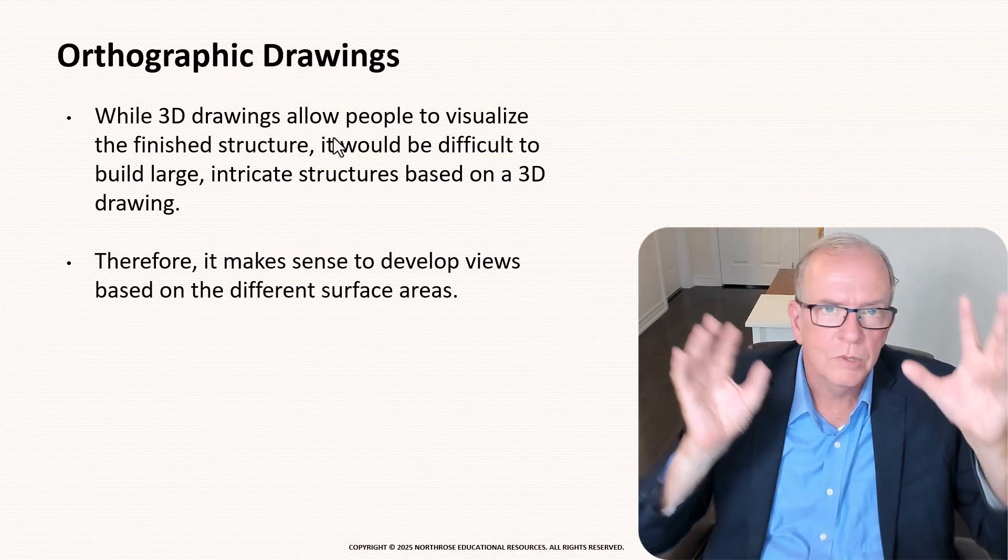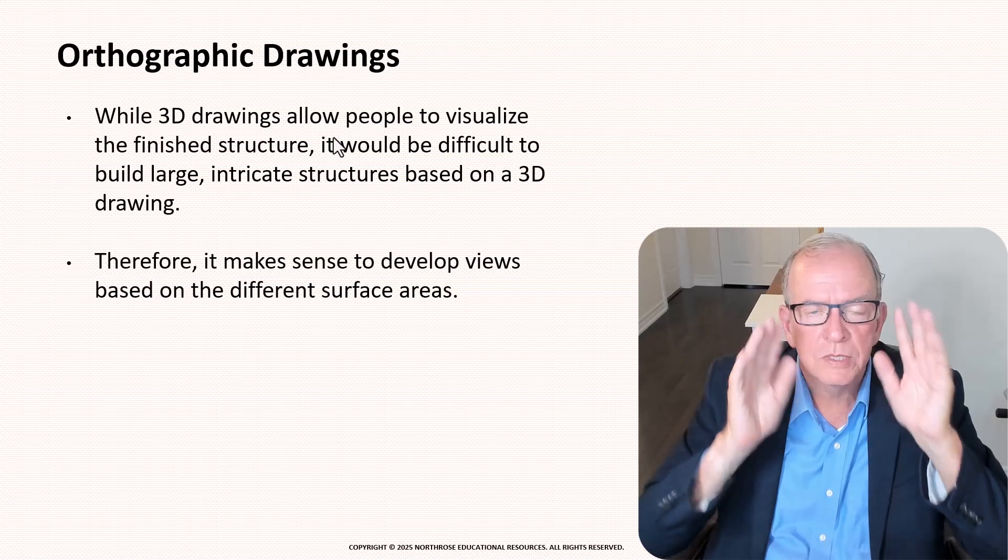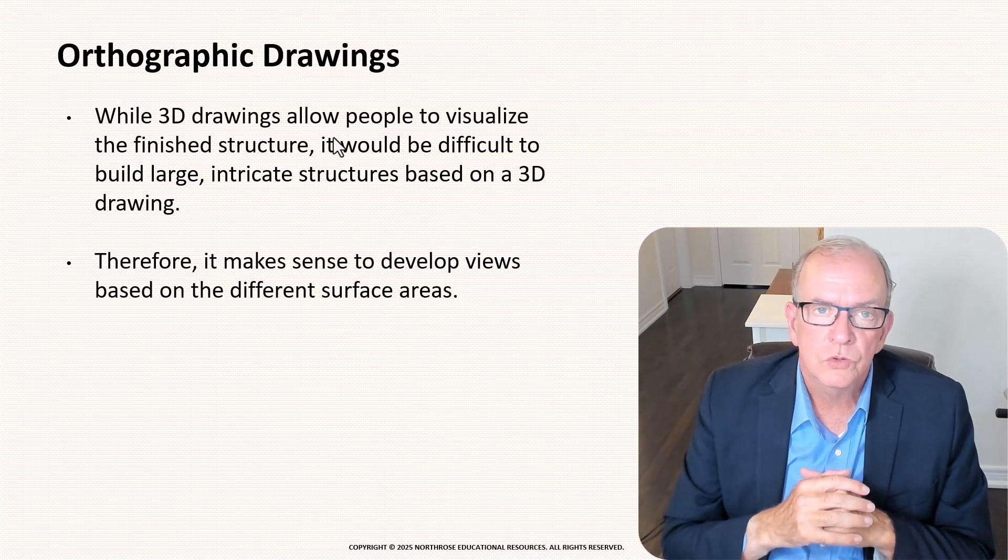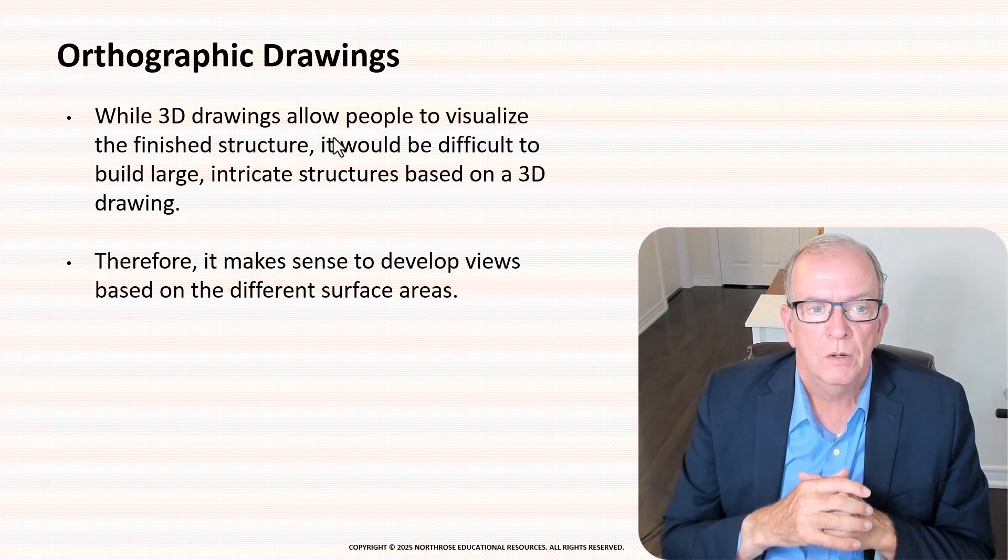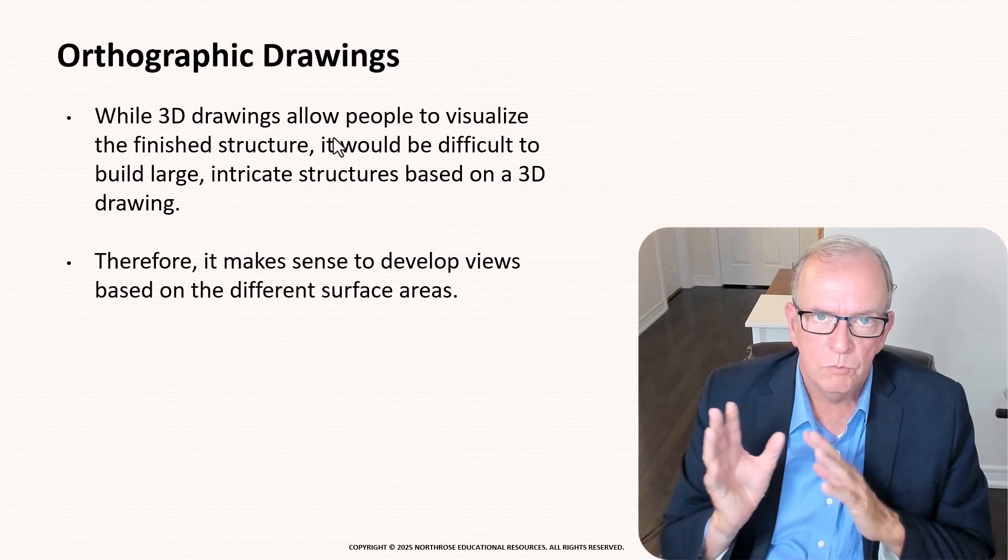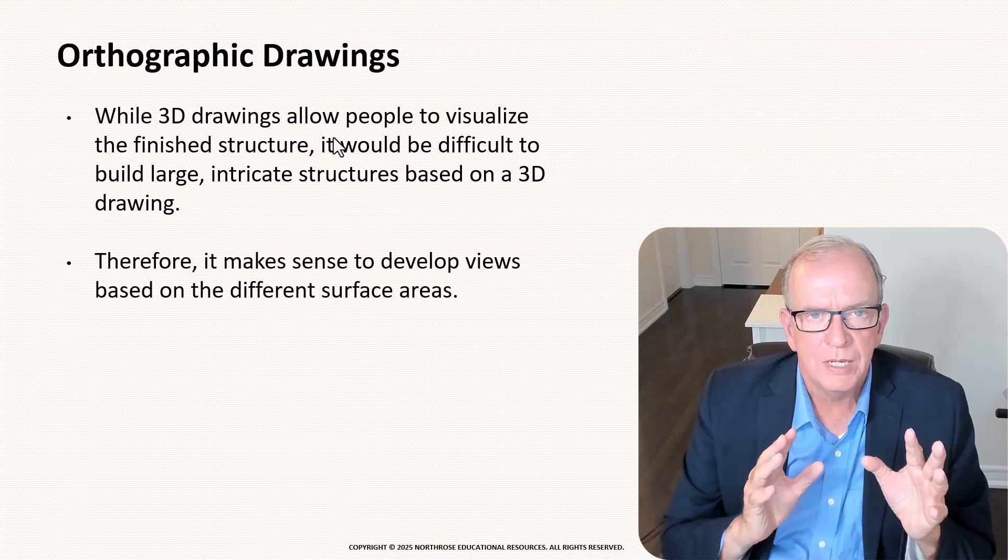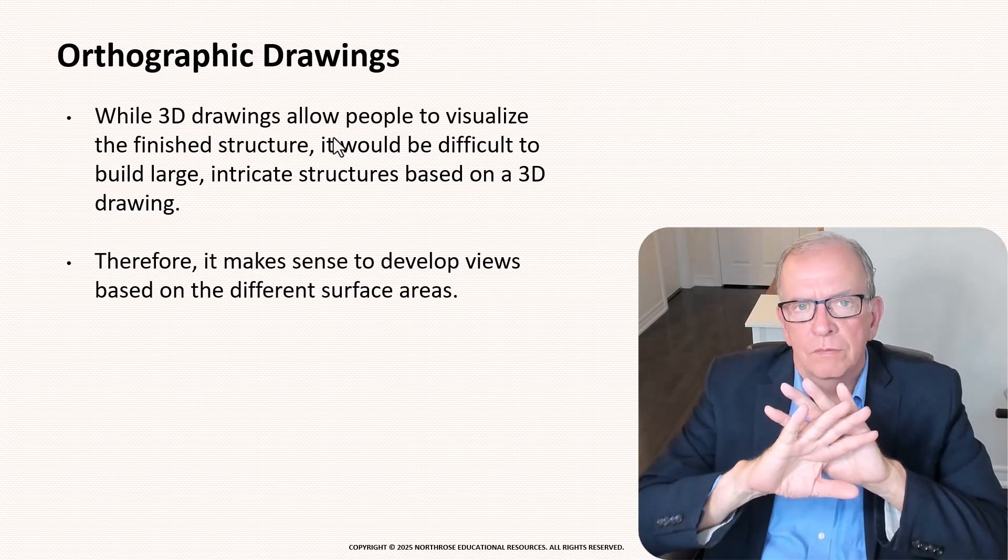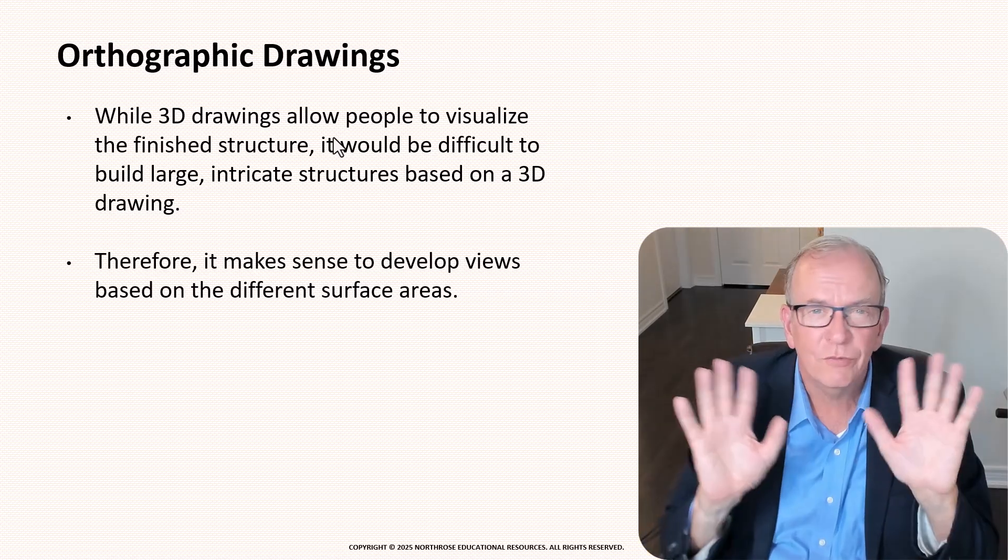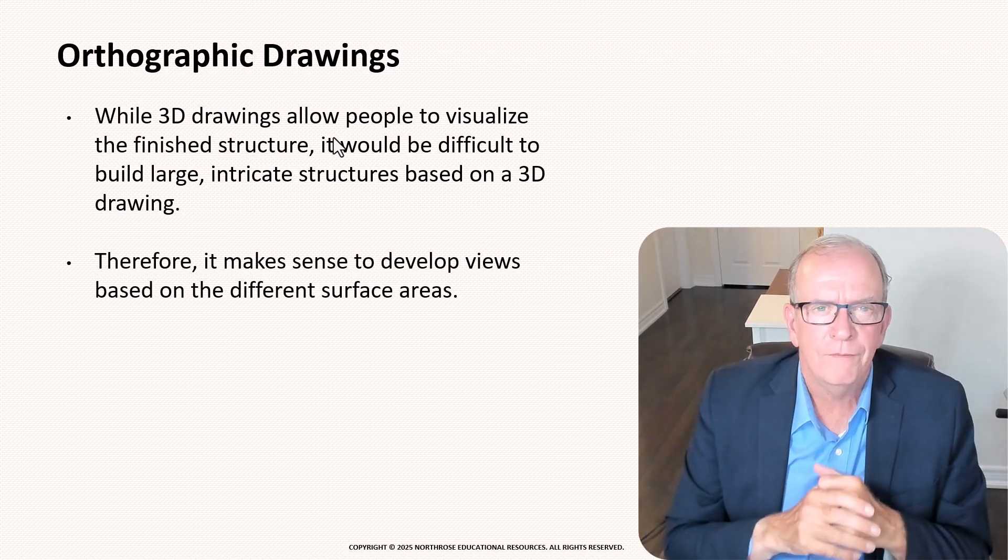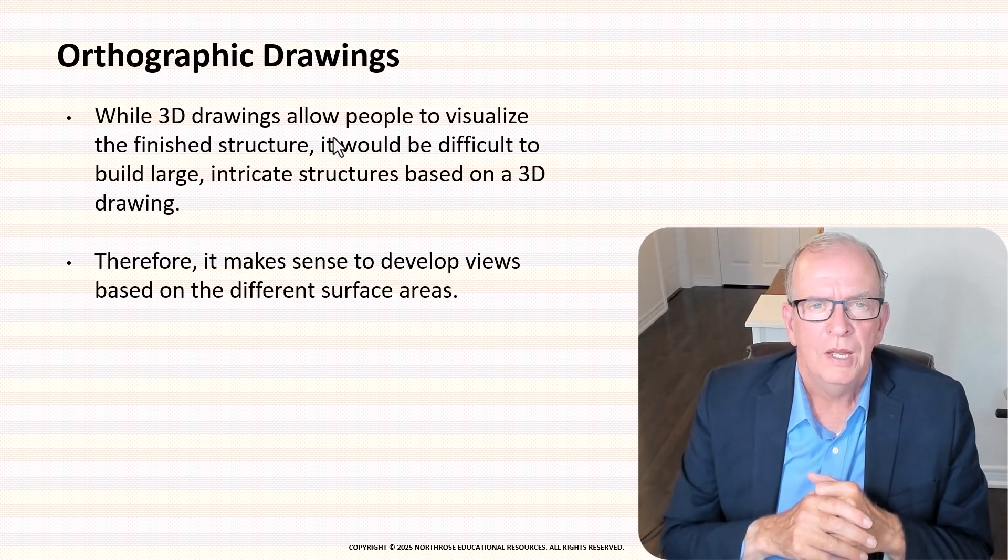which means it's got to be able to be three-dimensional so that you can rotate it you can walk through it you can see things that you wouldn't see normally on construction drawings but we are moving more in that direction but to put all the detailed information that we need we still need orthographic drawings which are just flat-on view